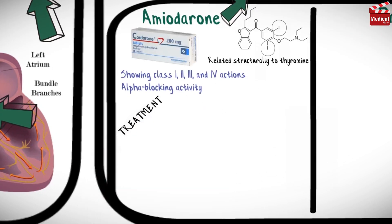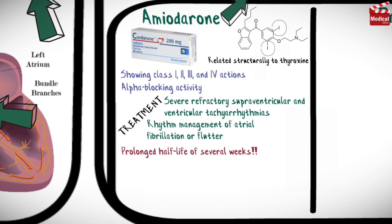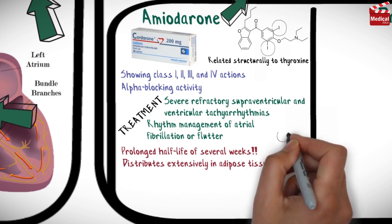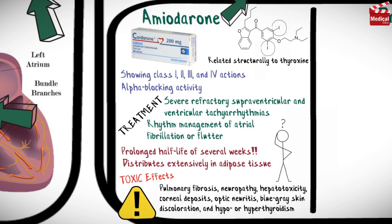Amiodarone is effective in the treatment of severe refractory supraventricular and ventricular tachyarrhythmias, and it is the main therapy for rhythm management of atrial fibrillation or flutter. It has a prolonged half-life of several weeks and is distributed extensively in adipose tissue. Amiodarone shows a variety of toxic effects including pulmonary fibrosis, neuropathy, hepatotoxicity, corneal deposits, optic neuritis, blue-gray skin discoloration, and hypo- or hyperthyroidism, so it requires close monitoring to reduce toxicity.